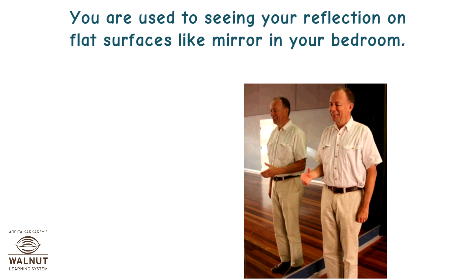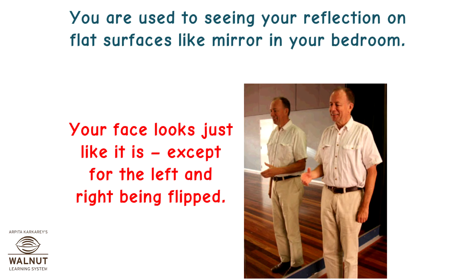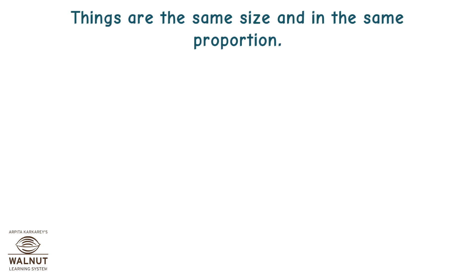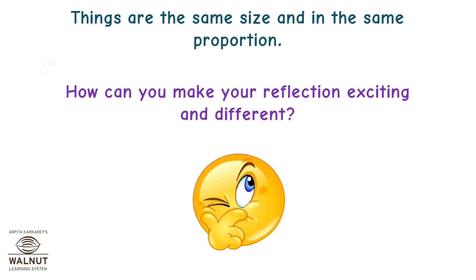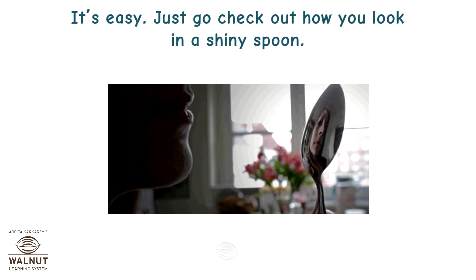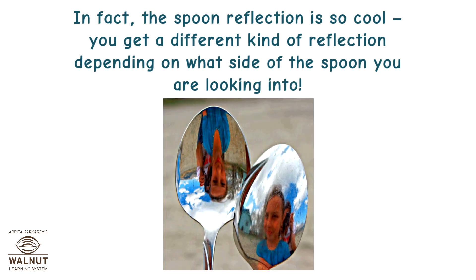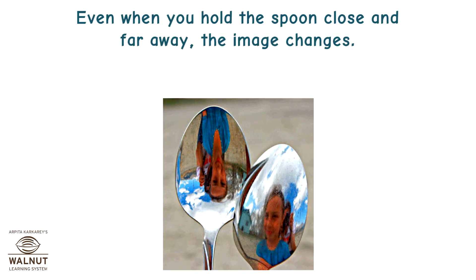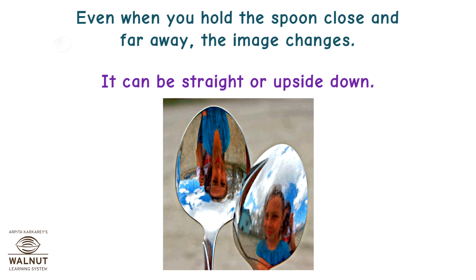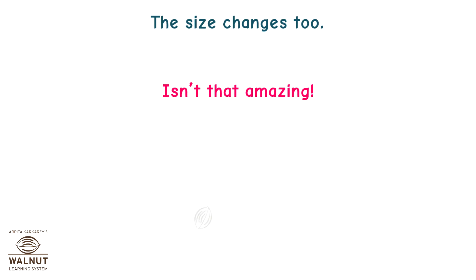You are used to seeing your reflection on flat surfaces like the mirror in your bedroom. Your face looks just like it is, except for the left and right being flipped. Things are the same size and in the same proportion. How can you make your reflection exciting and different? It's easy — just go check out how you look in a shiny spoon. The spoon reflection is so cool; you get a different kind of reflection depending on what side of the spoon you are looking into. Even when you hold the spoon close or far away, the image changes. It can be straight or upside down, and the size changes too.